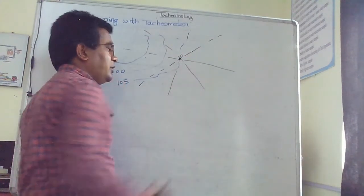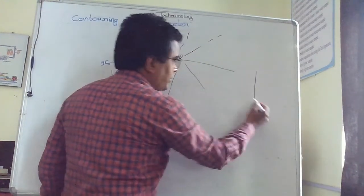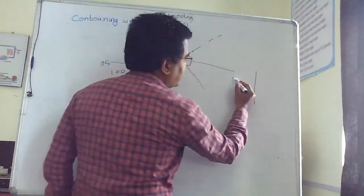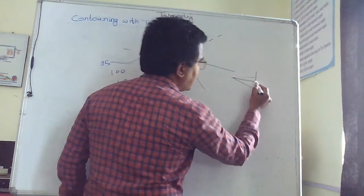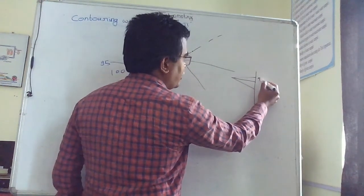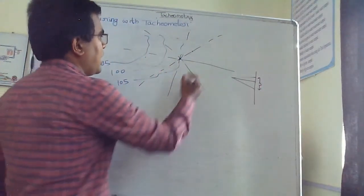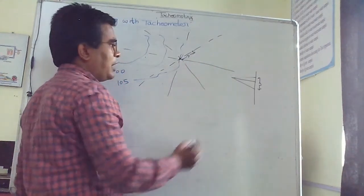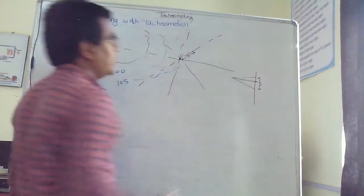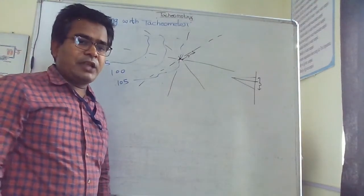At this point, by observing the staff - the upper cross hair reading, middle cross hair reading, and lower cross hair reading - I am going to get the distance of this point D by noting the upper and lower cross hair readings.